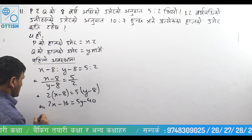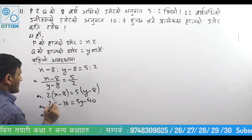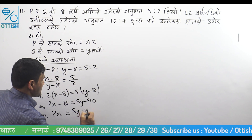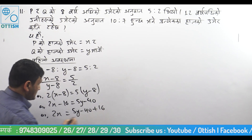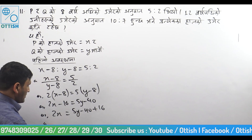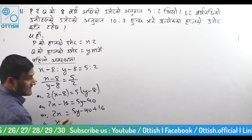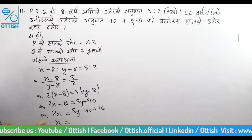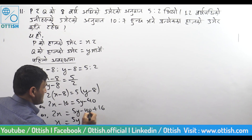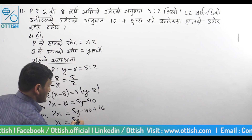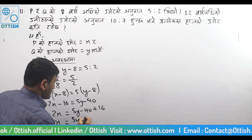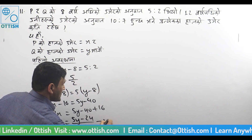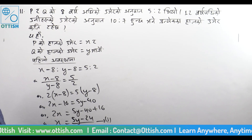We can simplify: 5Y minus 40 plus 16 gives us 2X equal to 5Y minus 24. We will call this equation one and set it aside.